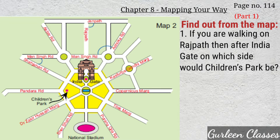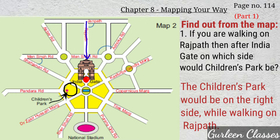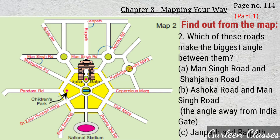Find out from the map — number 1: if you are walking on Rajpath, then after India Gate, on which side would Children's Park be? Here you can see Rajpath lane and India Gate. If you are standing at India Gate, then Children's Park is on your right side. Second question: which of these roads make the biggest angle between them? Part A — Maan Singh Road and Shahjahan Road. Here in Map 2 you can see Shahjahan Road and Maan Singh Road, and in the middle you can see the angle between them.